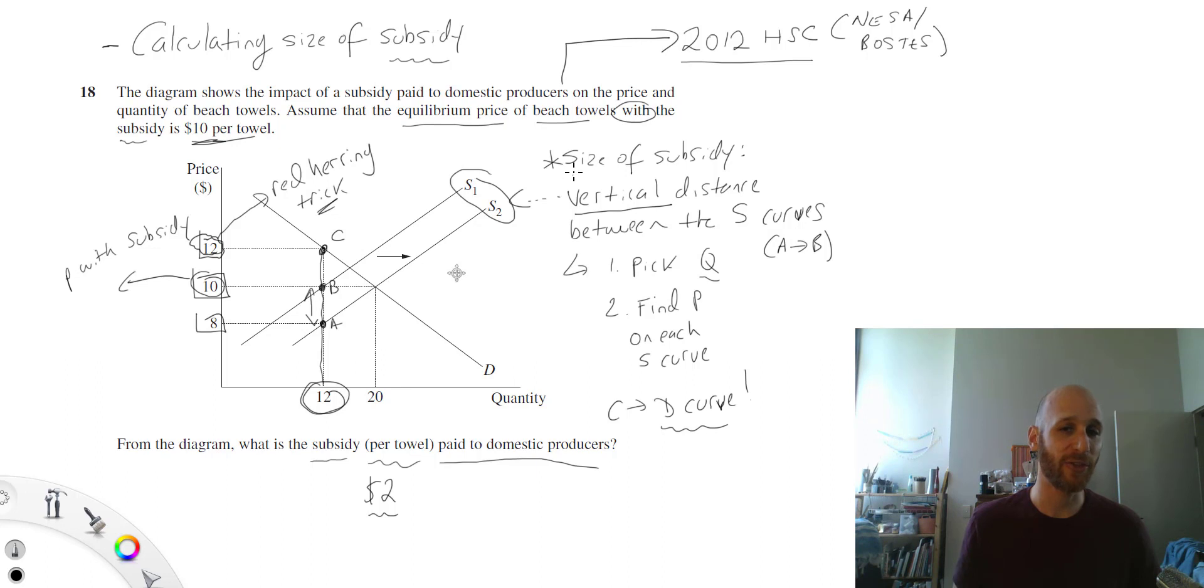If I'm working out the size of the subsidy, I want to know the vertical distance between the supply curves. The way that I like to do it is: I pick a quantity, I find the price on each supply curve, and then step three is to calculate the distance.